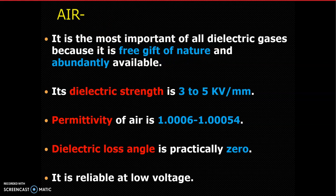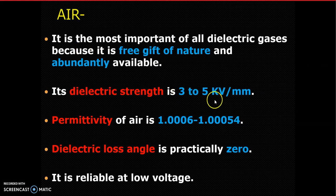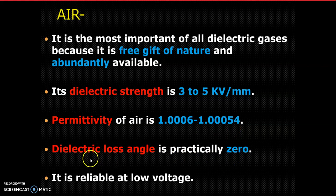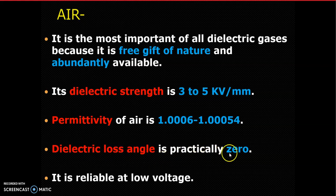Where is air used? In switches - you can see it on your switchboard at home, between two switches, air is used. Also in transmission lines, air is used over the transmission line. Its dielectric strength is 3 to 5 kV per mm. You can compare this with SF6, which will be higher. The permittivity of air is 1.006 to 1.00054. Dielectric loss angle is practically zero - this is one of the highest advantages of air. When you use air, losses will be very less because air also provides good cooling.